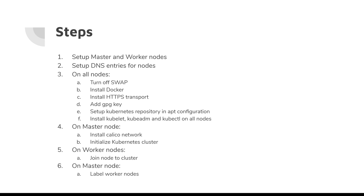Kubernetes recommends no swapping of data, and I will show how to do that. Then install Docker on all nodes — both master and worker nodes. Install the apt HTTPS transport so they can communicate securely, and install the GPG key so that you can install the Kubernetes components properly. Then set up the Kubernetes repository — in this case it will be a Ubuntu environment so the apt configuration needs to be set up properly.